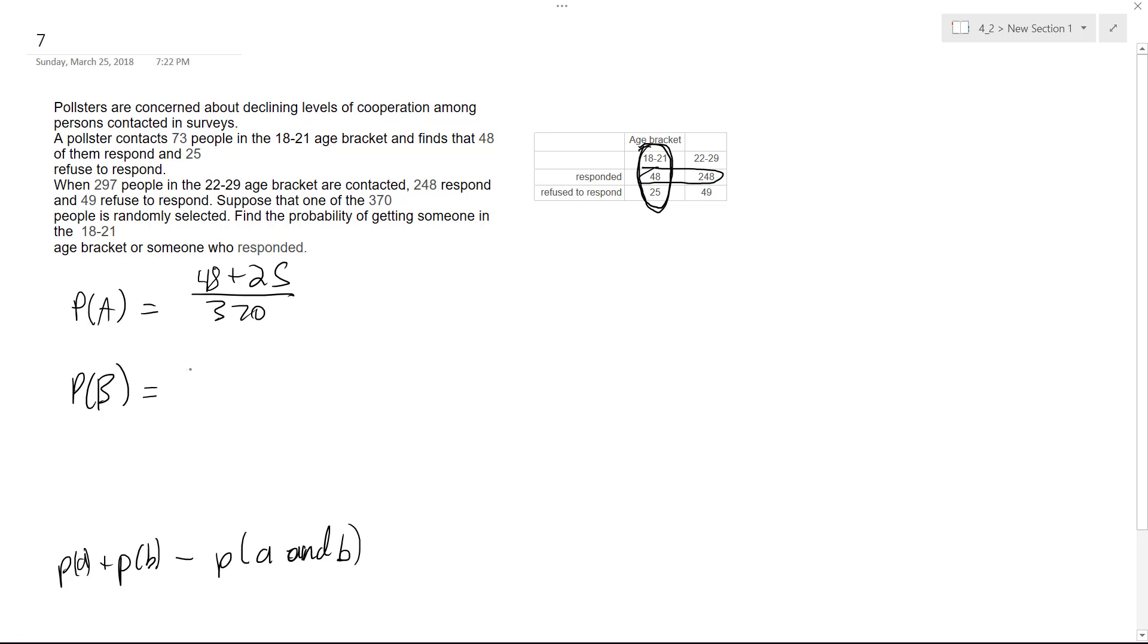Probability of B is people responding, so it's gonna be 48 going across, 48 plus 248, all over 370.